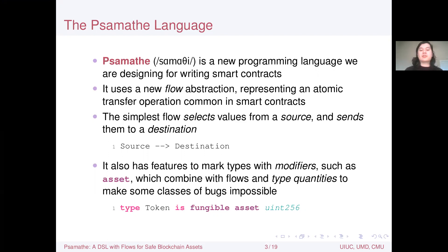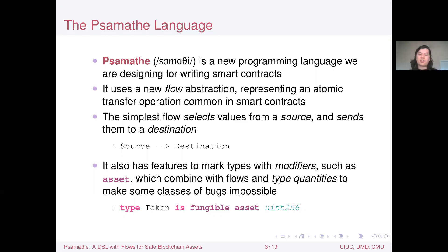Samathi also has features to mark types with modifiers, such as asset, which combine with flows and type quantities to make some kinds of bugs impossible. Here we have a type declaration using two modifiers, fungible and asset, represented by u256 unsigned integers, which represents how many tokens this value represents.